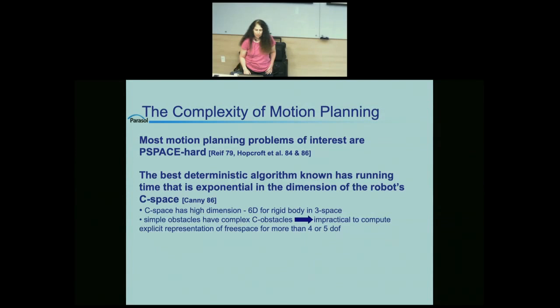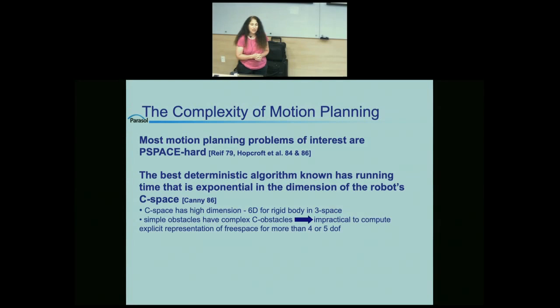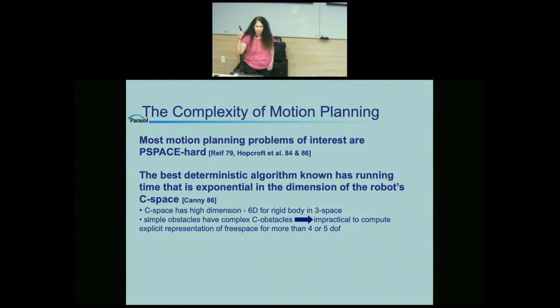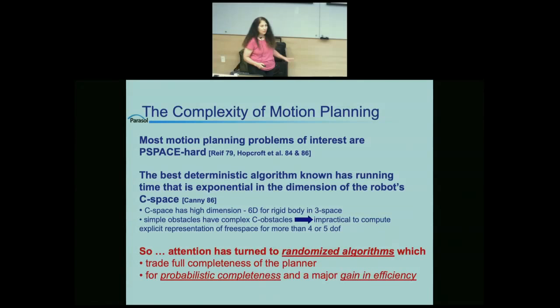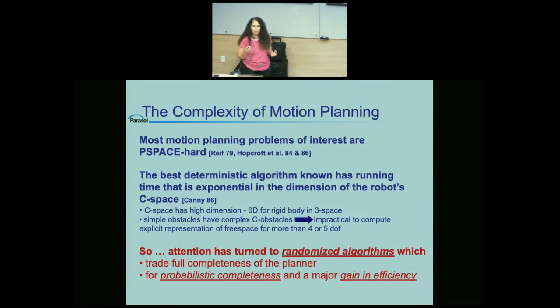One unfortunate thing is that most problems we want to solve are really hard. The best deterministic algorithm for solving the motion planning problem was developed by John Canny in his PhD thesis in 1986, and it can only really be applied to problems with four or five dimensions — so we can't even use it on a rigid body in 3D space, which has six dimensions. So we turn to randomization or probabilistic methods, trading the guarantee of always solving the problem for a method that will often solve it well and much faster.